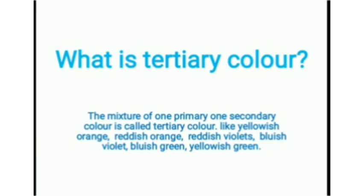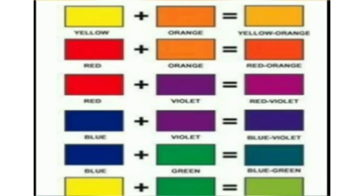The mixture of one primary and one secondary color produces an intermediate color. For example: yellow plus orange gives yellow-orange; red plus orange gives reddish-orange; red plus violet gives red-violet; blue plus violet gives blue-violet; blue plus green gives blue-green; yellow plus green gives yellow-green. All students, please write all of this down in your art copy and read it properly. Thank you.